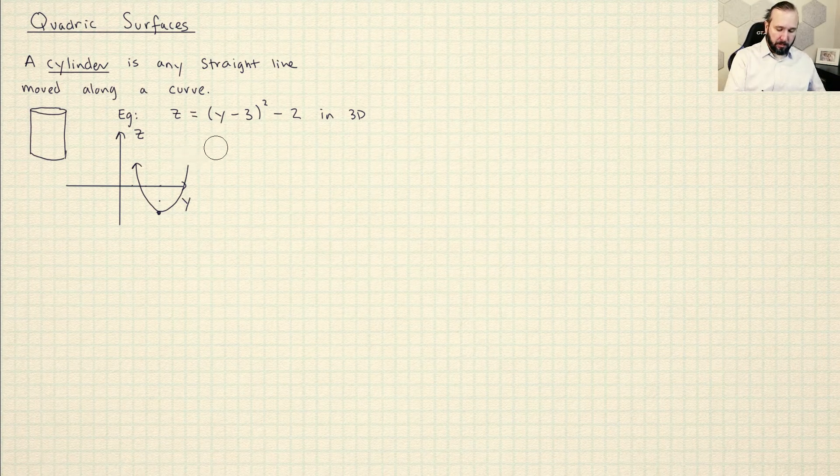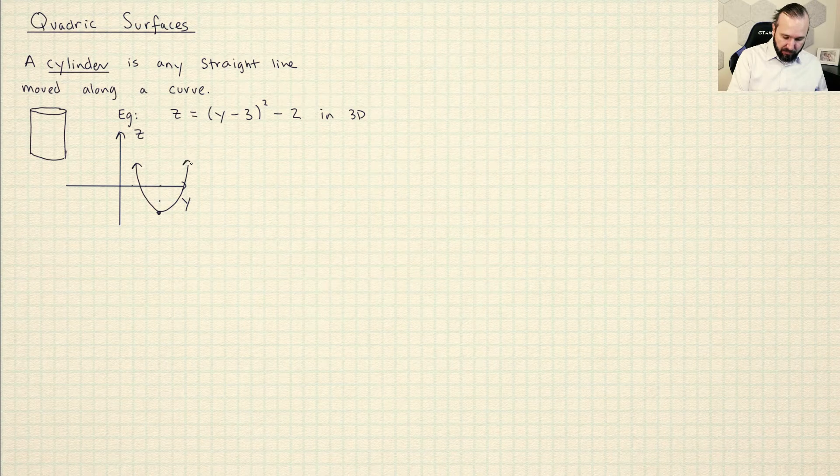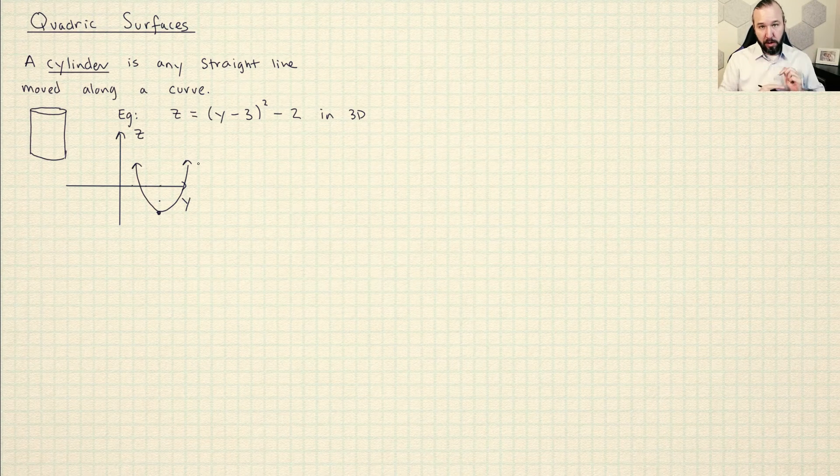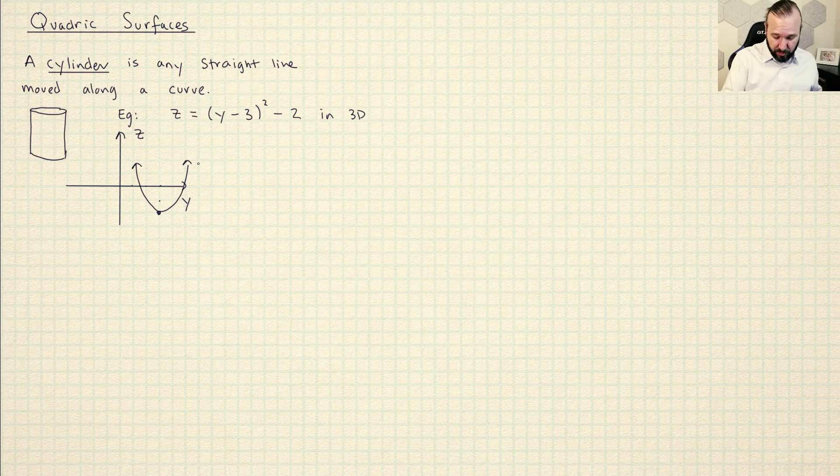Now, since this graph is independent of X, it's the same parabola except it's that parabola everywhere on the X axis. It doesn't matter what the X is.